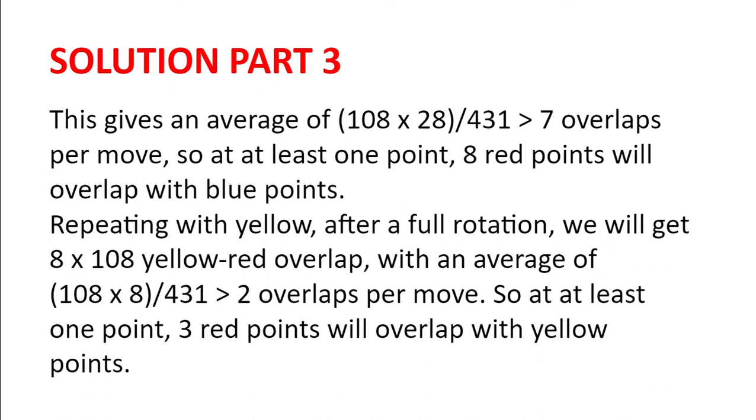We will now repeat with the last color. After a full rotation, we will get 8 multiplied by 108 yellow to red overlaps, with an average of 108 multiplied by 8 divided by 431 overlaps per move, which is just over two overlaps per move. So at least one point, three red points will overlap with yellow points.